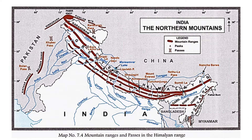The northernmost range is the Karakoram range. It lies between the Pamir Knot in the north and the valley of the river Indus in the south. On the Karakoram, we have one of the highest peaks — Mount K2 — with a height of about 8,611 meters. The Karakoram range has extensive snow fields and large glaciers, which include the Siachen and the Baltoro glaciers.